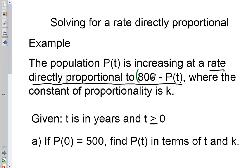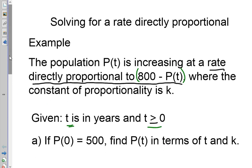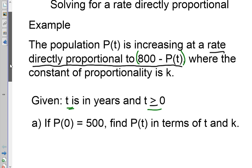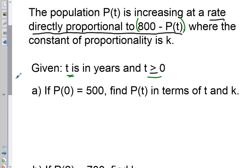The rate is directly proportional to 800 minus P of T, where the constant of proportionality is K. We are given that T is in years and T must be greater than or equal to zero.